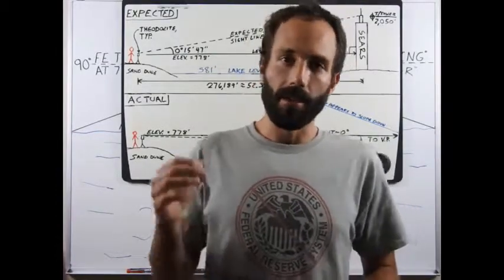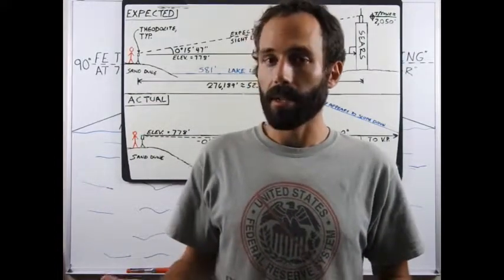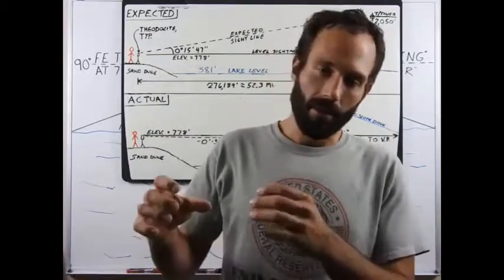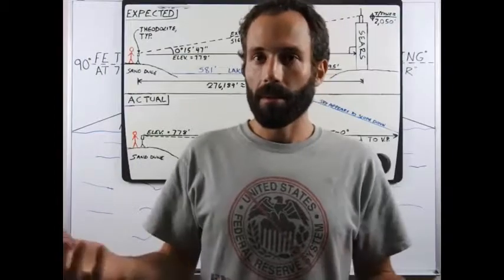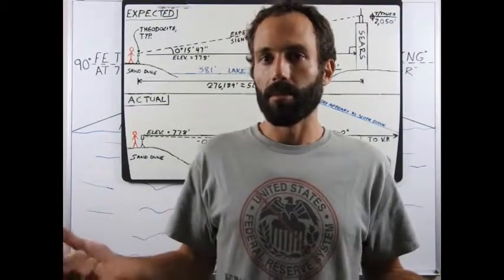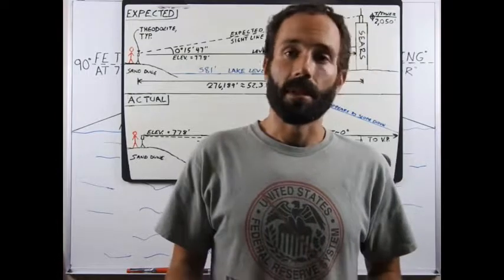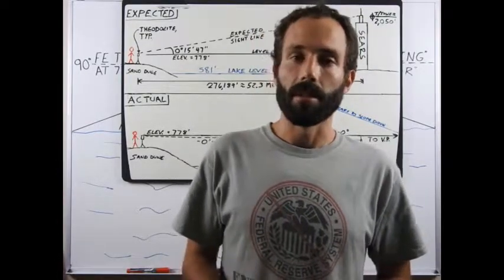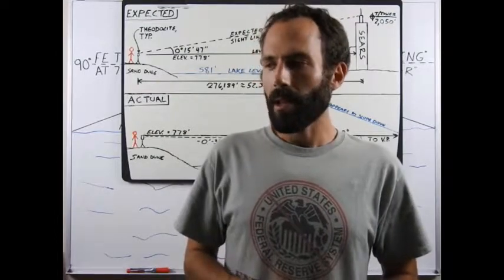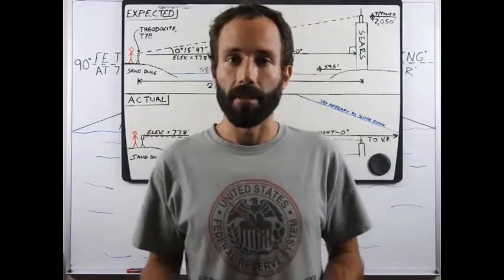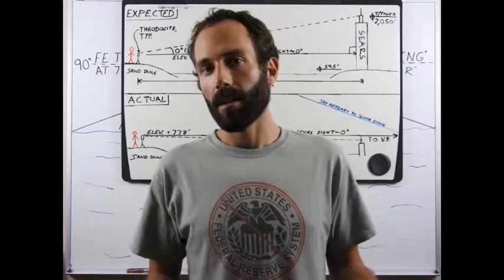A theodolite works off of sight — you have to look through the crosshairs to use it. The user's vision has to be used for the device to work, so we're all subject to the law of perspective. Survey sight levels are typically accurate up to about 150 meters, roughly 500 feet. Theodolites have a maximum range of about 1,000 meters, which is less than a mile, and the distance from Warren Dunes Park to Chicago is about 53 miles.